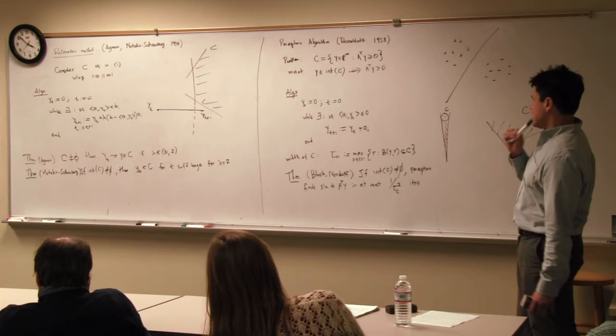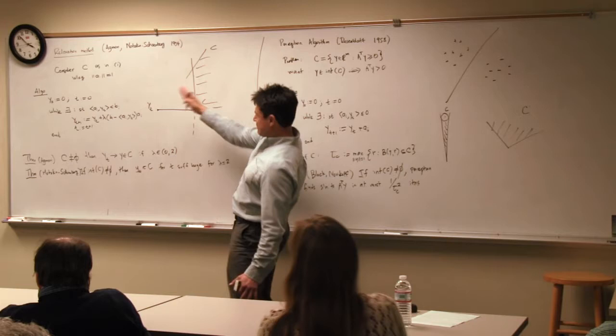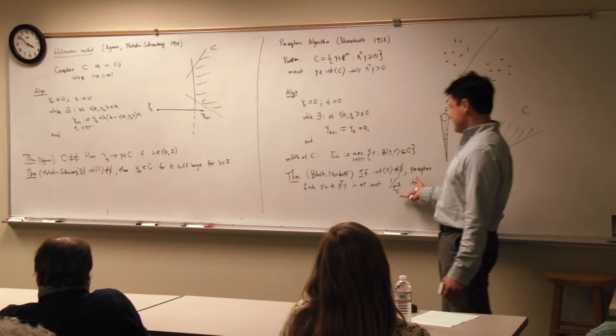The perceptron can be seen as a special case of the relaxation method — its homogeneous version. Here we have a statement about how fast the algorithm will find a solution.